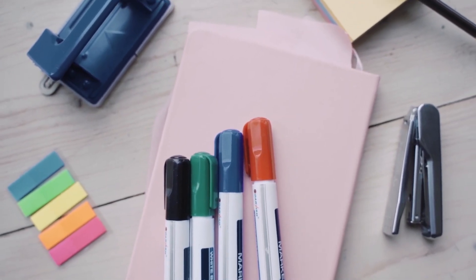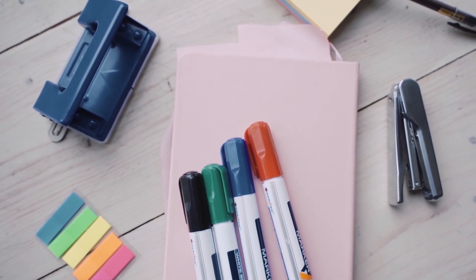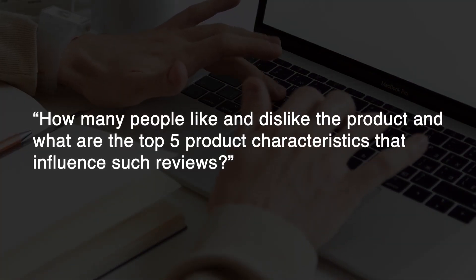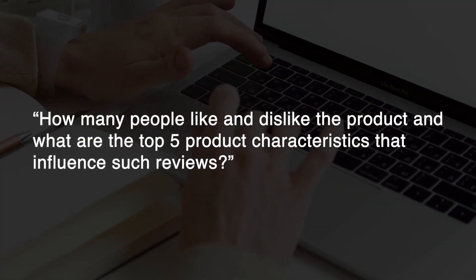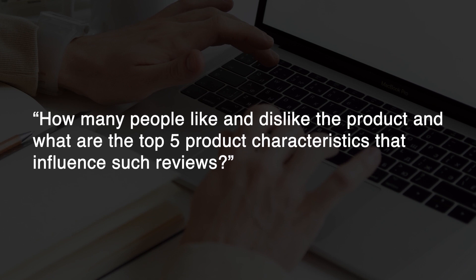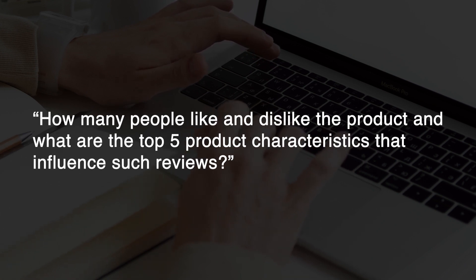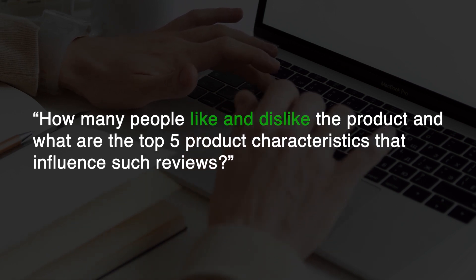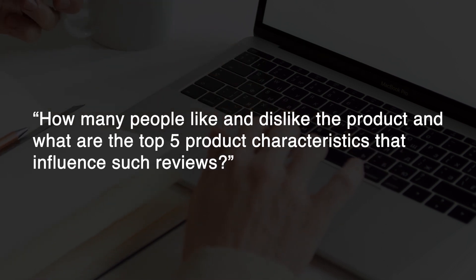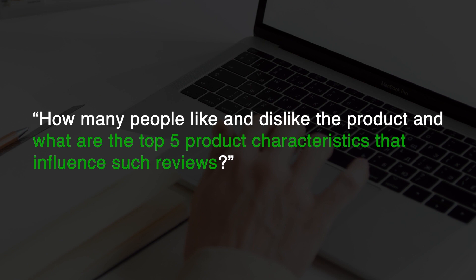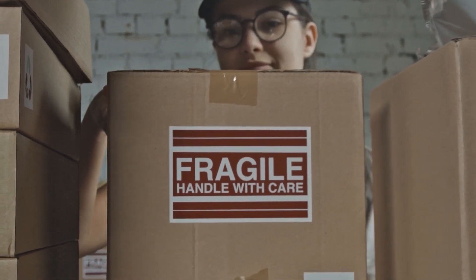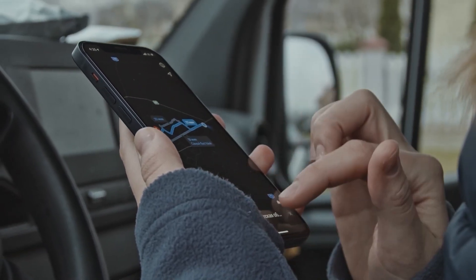Pause this video, take a moment and try to come up with as many questions as you can. Here is a question that I would have liked to answer given the dataset: how many people like and dislike the product, and what are the top five product characteristics that influence such reviews? If we study this question, you can see that I am not only focusing on the people who like my product, but I am removing any bias by paying equal attention to people who like as well as dislike my product. Another takeaway here is that I am trying to feed myself information relating to the top five product characteristics influencing the reviews so I can improve them or innovate them.